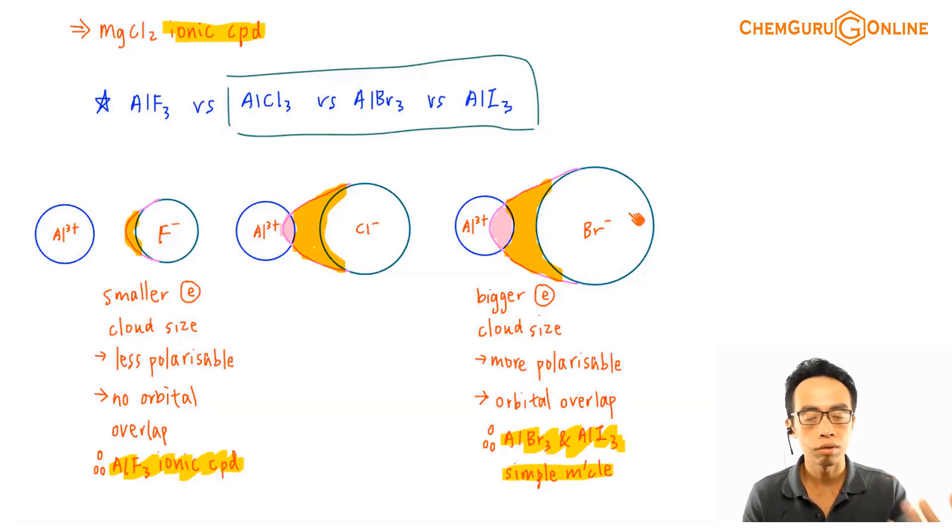The electron clouds are even more easy to distort as compared to Cl-, which means that if Cl- has distortion of electron cloud with orbital overlap, Br- and I- definitely will be the same. And the extent of the orbital overlap will be even greater because Al3+ will be able to pull the electron cloud of Br- and I-, which is bigger and more polarizable,